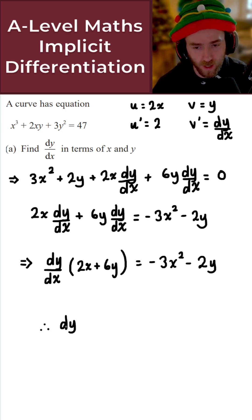Therefore, dy by dx is equal to minus 3x² minus 2y all over 2x plus 6y.